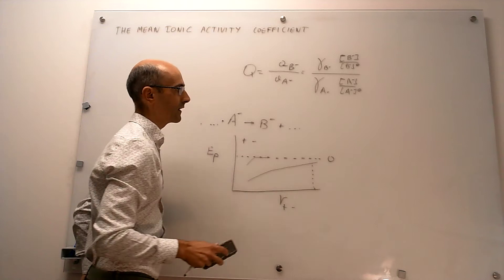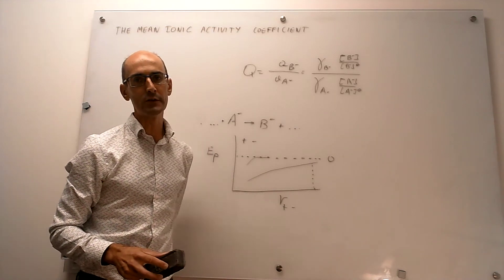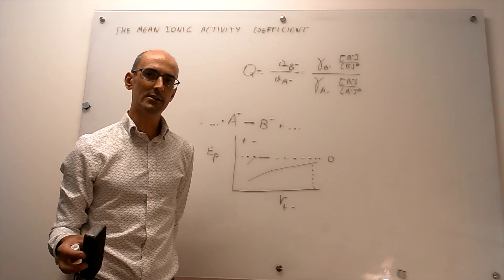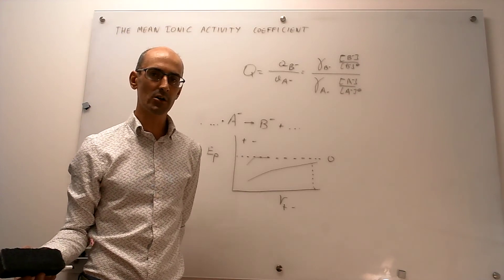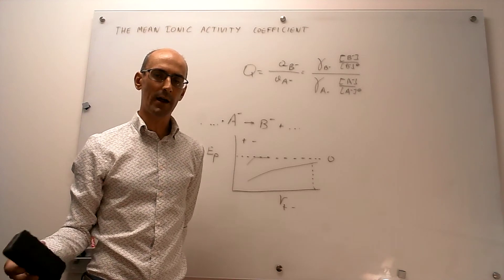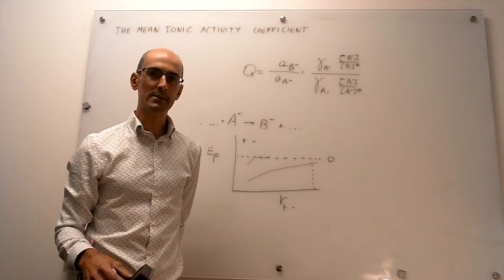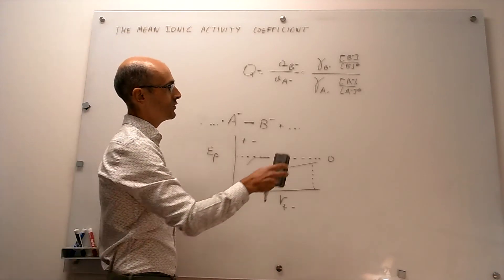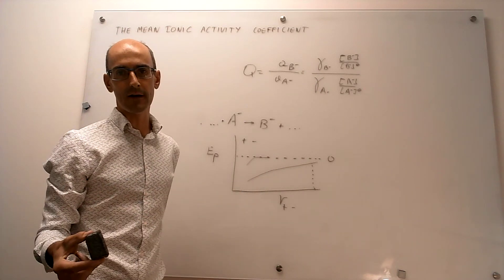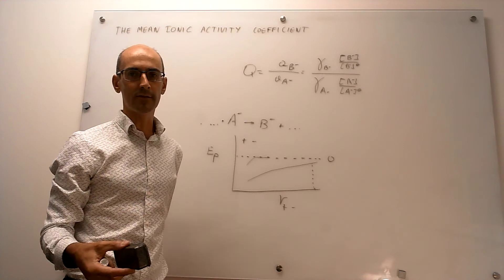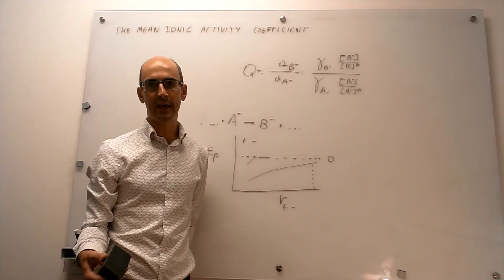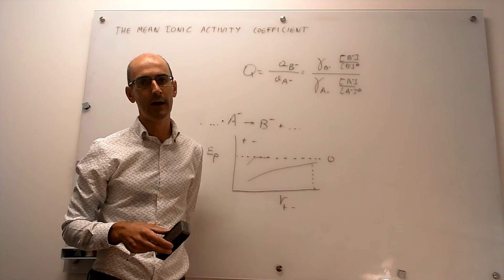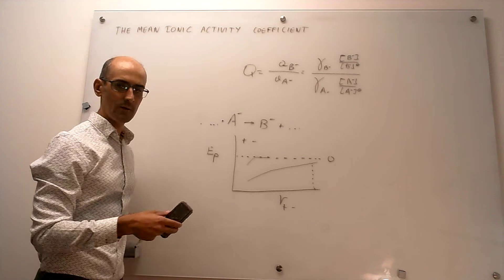The question is: how do we think about those ionic activity coefficients? There is a fundamental problem with ions — you can never have a solution that is exclusively negatively charged or exclusively positively charged. Solutions are electrically neutral. So measuring the activity coefficient of the negative ion separately from the positive ion is impossible, because you cannot have solutions containing only one type of ion. You always have both in the mix.